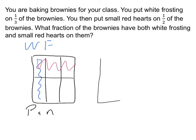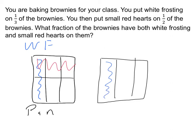Another possibility is to redraw our pan with the white frosting, divide the pan in half another way, and maybe put our red hearts over here — or maybe over here. There are a lot of different possibilities, but the point is there are going to be different answers for every one of these possibilities.